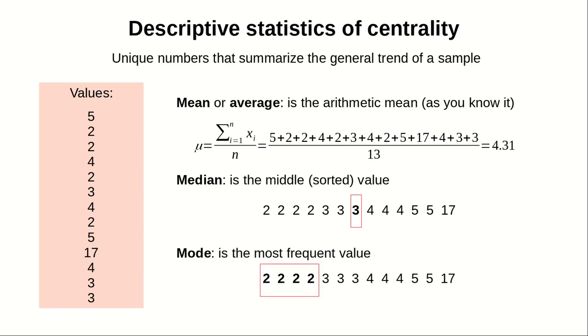And the mode is another way of measuring centrality, which is the most frequent value. All three ways of measuring centrality give us different aspects of the sample.